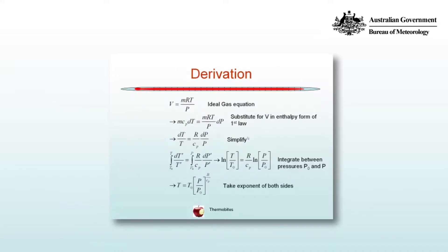As we move through this derivation, feel free to stop the video at any point. We can write the ideal gas equation in terms of the volume, written there as m rt on p, and substitute that into the enthalpy form of the first law, written as m cp dt is equal to m rt on p dp. The masses cancel on either side of the equation and we divide through both sides by cp t to obtain dt on t is equal to r on cp dp on p.